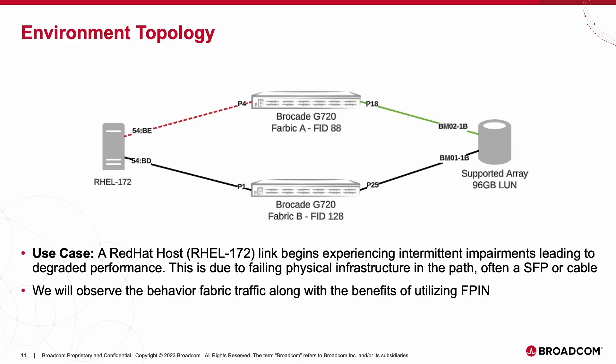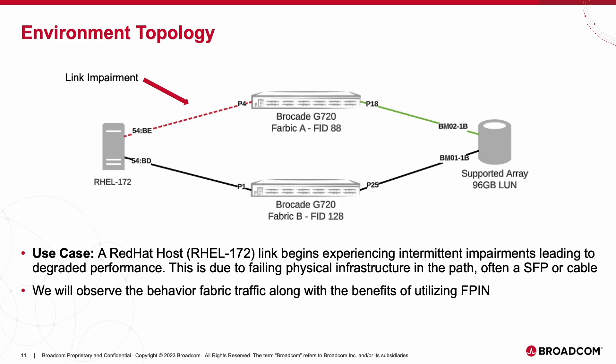The connection between the Red Hat host and port 4 of Fabric A will be experiencing an intermittent link impairment, which leads to a potential performance impact. Most of the time, this tends to be due to failing cables or failing SFPs in the path. We will step through the use case and observe path behavior when FPIN is disabled, as well as when FPIN is enabled.